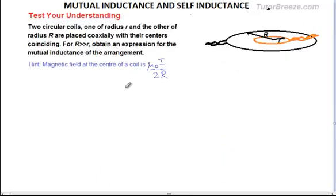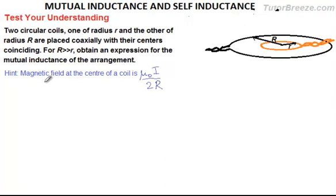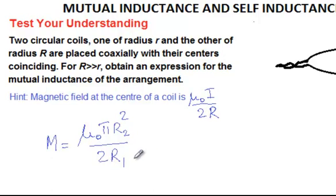To test your understanding, try this question. The hint given is that the magnetic field at the center of a current-carrying coil is μ₀I / 2R. You need to take the current in one coil, find the magnetic flux through the other, and take the ratio φ₂/I₁ to find the mutual inductance between the two coils. If you got the answer right, you've understood how to find mutual inductance for a given pair of circuits. If not, go back through the lesson and try again.